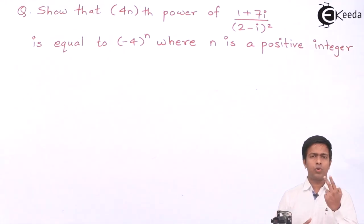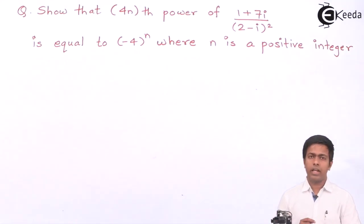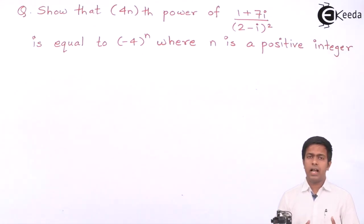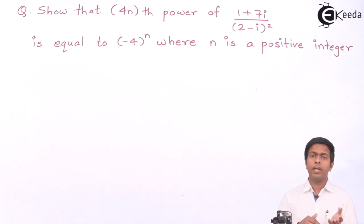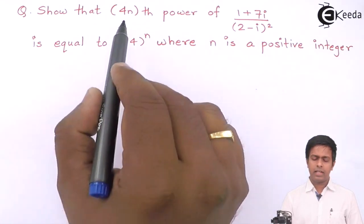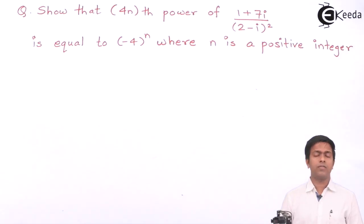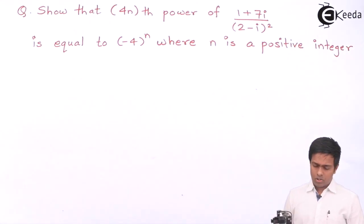I have two tasks: first, convert the given number into standard form; then convert that standard form into polar form; and finally apply De Moivre's theorem by taking the power as 4n. Let's start.